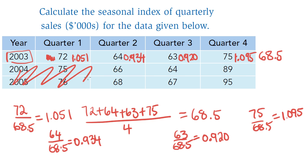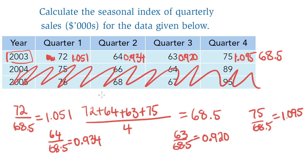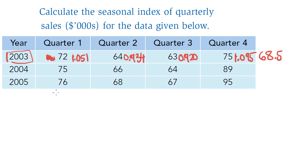If I just had one year's worth of data — just 2003 — I could stop here, because these numbers would be my seasonal indices. However, I have a couple more years: 2004 and 2005. So I'm going to need to factor those extra years into my calculation of an overall seasonal index for each quarter.